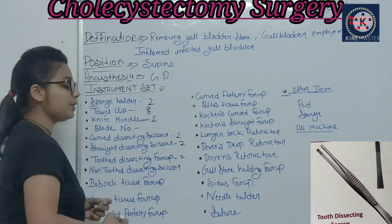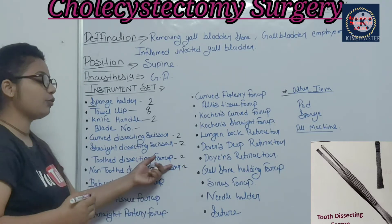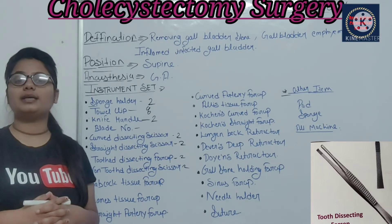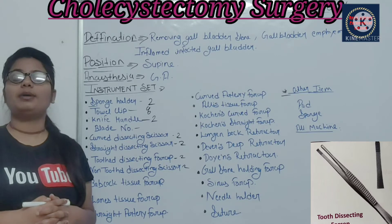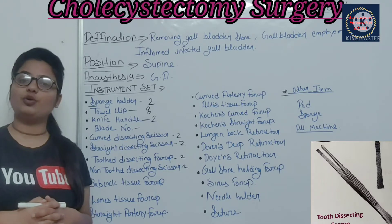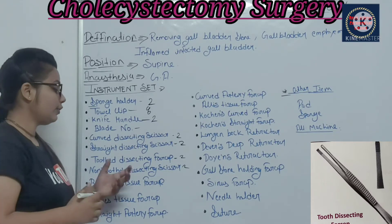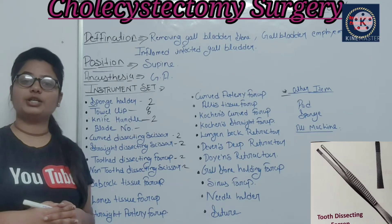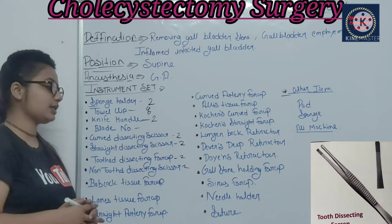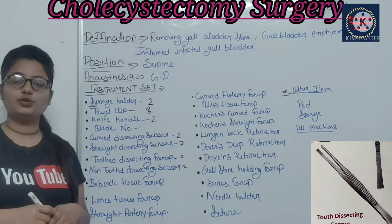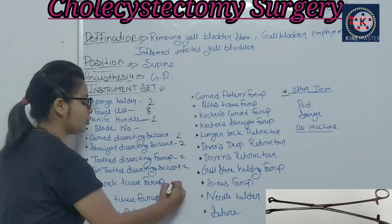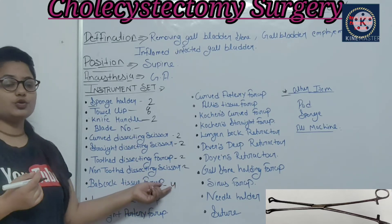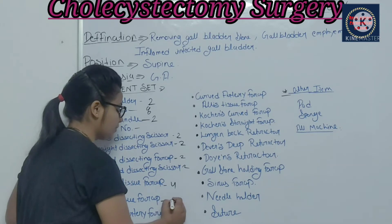You can use toothed dissecting forceps and non-toothed dissecting forceps. Toothed dissecting forceps are used for suturing time, holding bleeders, and tissues. Non-toothed dissecting forceps are used to hold tissue for incision. Keep a big size, medium size, and small size. Next are Babcock tissue forceps — you need 4. These are used to hold tissue. Lanish tissue forceps — you need 2.